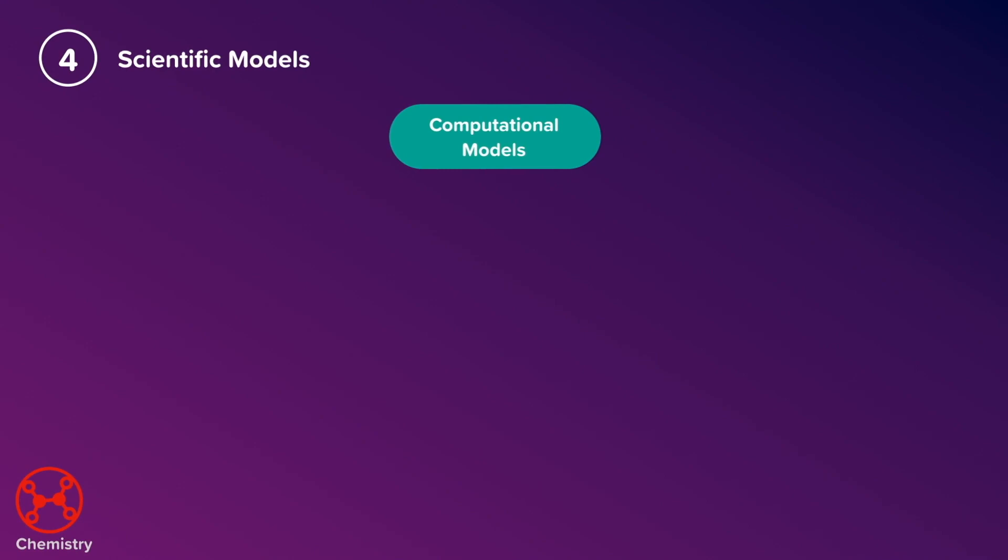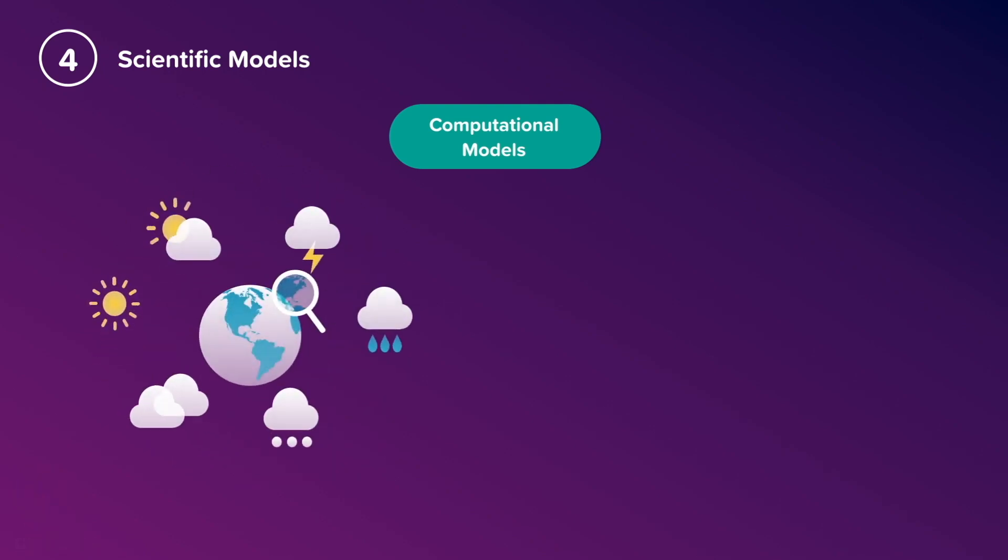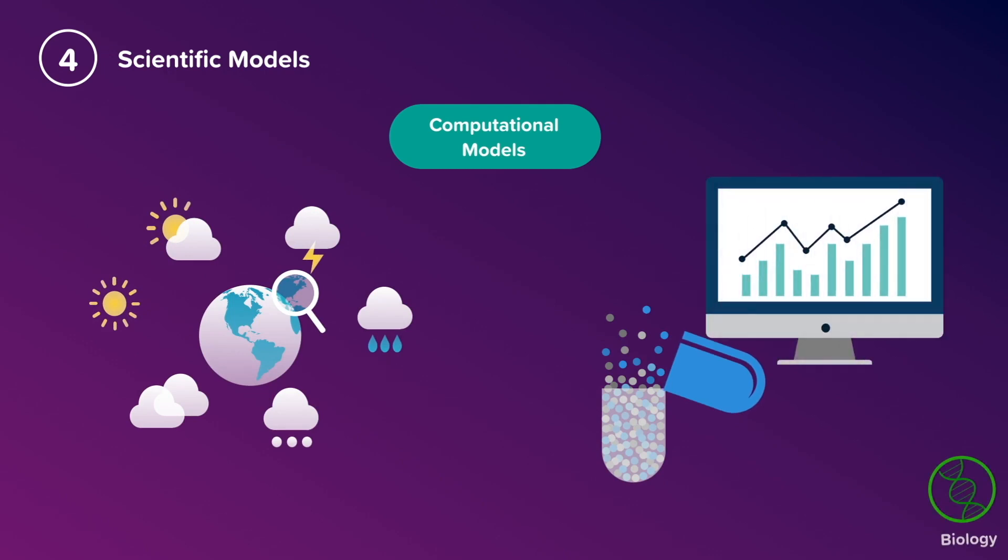Computational models are a type of mathematical model, but they use computers to simulate and study the behaviour of very complex systems, using a mixture of mathematics, physics and computer science. Computational models are used by the Met Office for forecasting the weather, or can be used to study the interaction and breakdown of drugs in the body, to identify safe dosages before trialing on whole animals or humans.